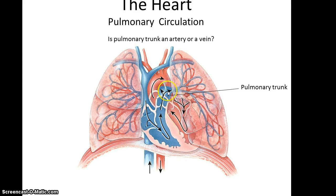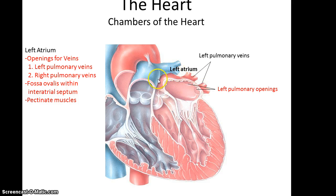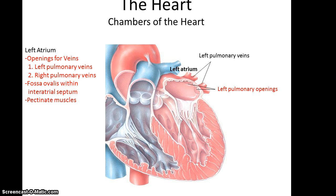The pulmonary trunk is an artery that sends blood away from the heart and toward the lungs, where the blood gets oxygenated and returns through the pulmonary veins to the left atrium. The left atrium has many similar structures to the right atrium. Its openings for veins are for the left and right pulmonary veins. You'll also see the fossa ovalis within the interatrial septum, and pectinate muscles on the outer surface of the left atrium's chamber.